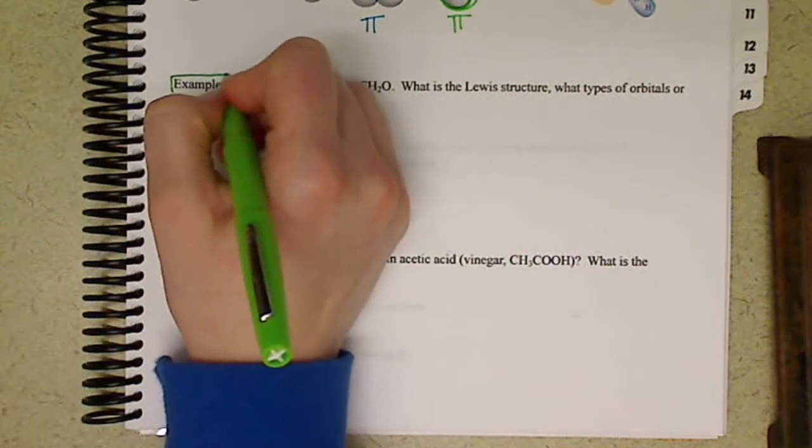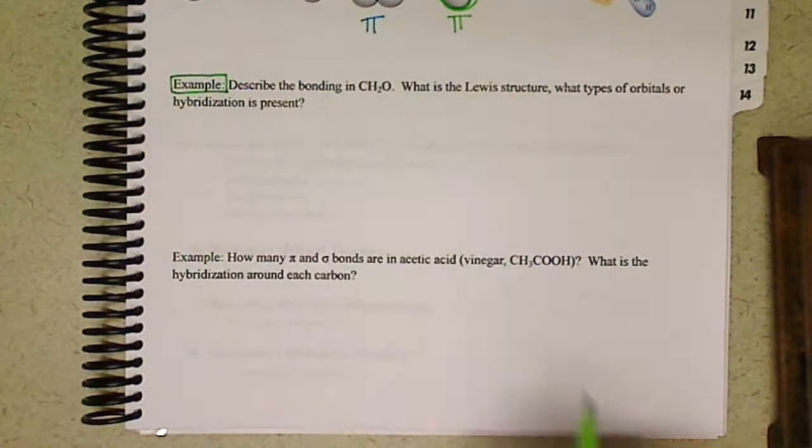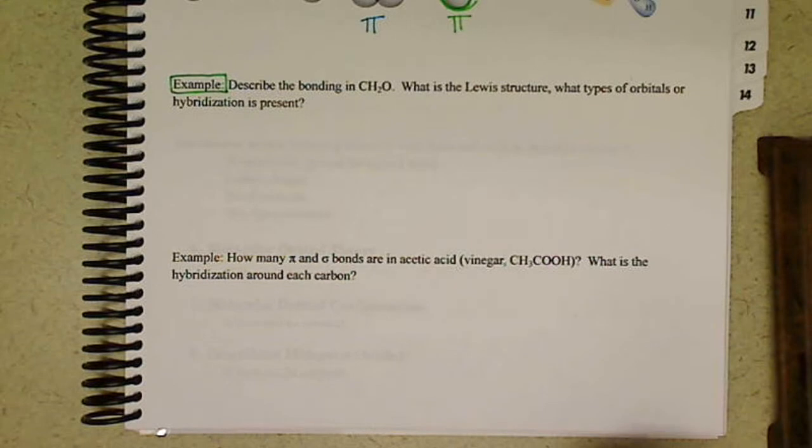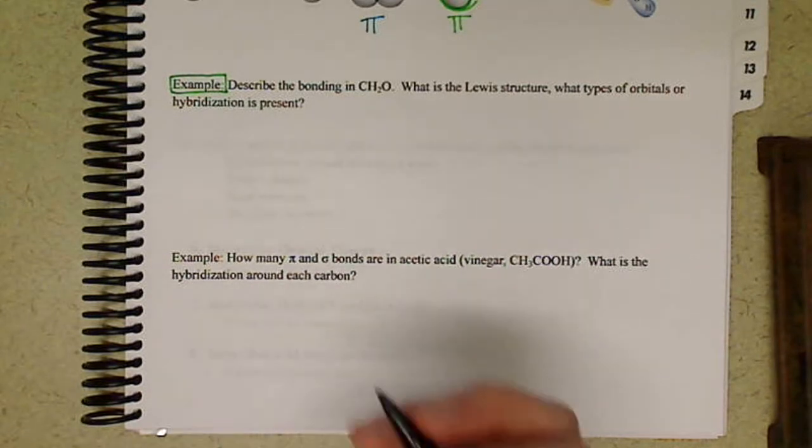All right, let's look at some examples. We want to describe the bonding in CH2O, and we want to know what the Lewis structure is, what types of orbitals or hybridization is present. So you can pause the video, try and come up with your Lewis structure.